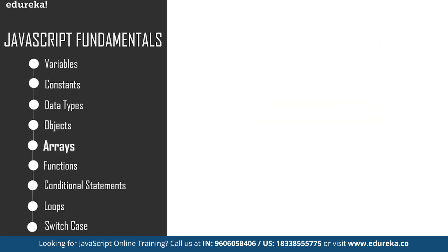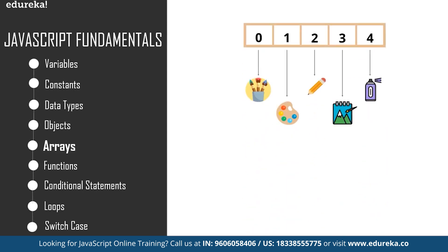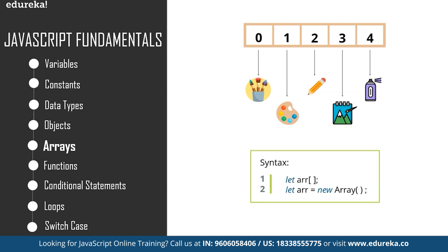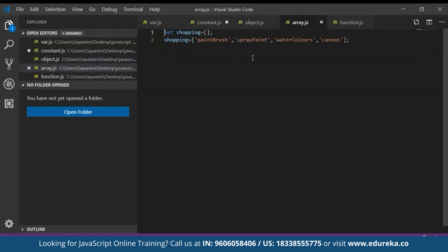An array is a data structure that contains a list of elements which store multiple values in a single variable. For example, if you went shopping to buy art supplies, the list of items you bought can be put into an array. To declare an array in JavaScript, we use the let keyword with square brackets, and all array elements must be enclosed within them. Inside the square brackets you can define the values — when no value is inserted, it is an undefined array, and you can put any number of values inside.